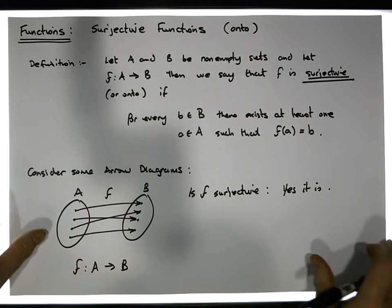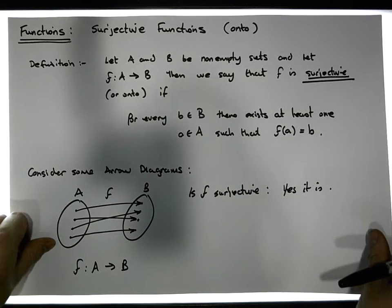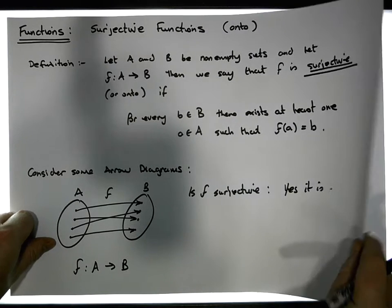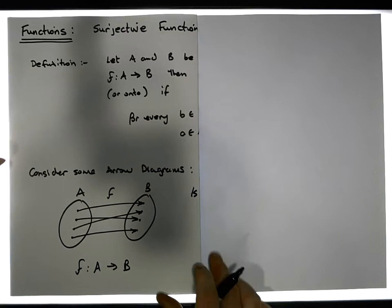Let's have a look at another example of what might or might not be a surjective function, again through arrow diagrams. Later on we're going to define that function algebraically.